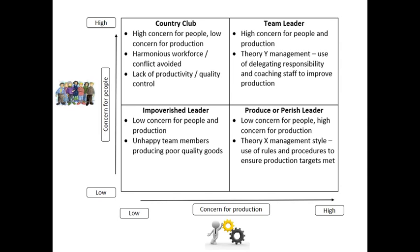The produce or perish leader — the one thing you can say in their favour is that at least the staff would probably be quite productive, even though that may have been achieved with the use of rules, regulations, and fear. Our worst kind of leader within the grid is the impoverished leader, who doesn't show any concern for people or production — you're going to have unhappy team members producing poor quality results.